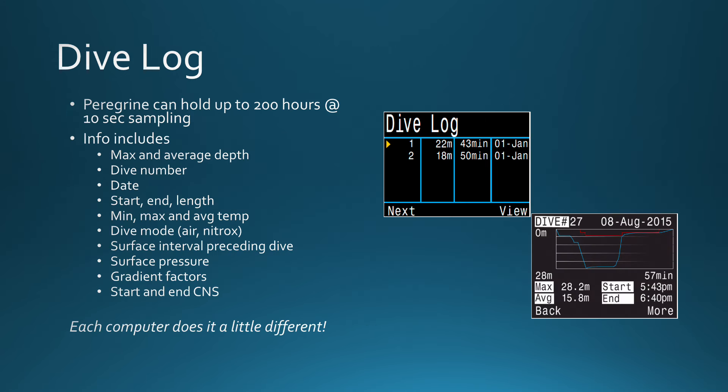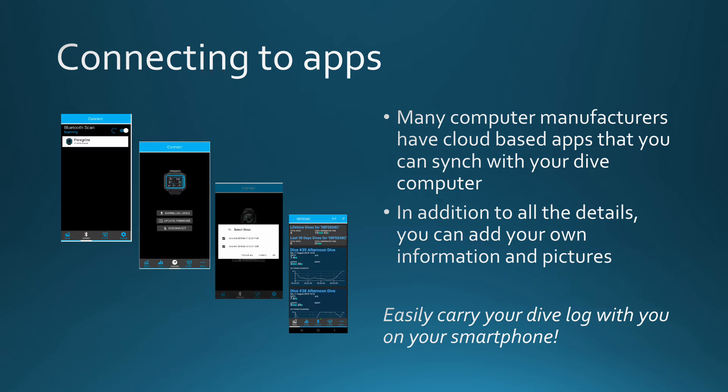Now that we have completed a dive, you can use the computer's dive log function to get all the details regarding the dives you have made. You are provided with a list of the dives, and when you view a specific dive, you will get a wealth of information including max depth, average depth, start and stop time, and a whole lot more. The Peregrine can hold up to 200 hours of data at a 10-second sampling rate. Many dive computers also leverage cloud-based apps that sync with your computer via Bluetooth. You can download your dives and enter details, information, and pictures for that dive. Additionally, these apps allow you to keep your dive computer updated with the latest firmware releases.